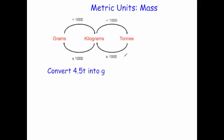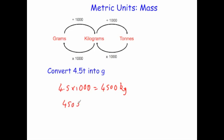Convert 4.5 tons into grams. Going from tons to grams, you times by 1,000 to get into kilograms: 4.5 times 1,000 equals 4,500 kilograms. Then to go from kilograms into grams, times by another thousand: 4,500 times 1,000, adding on three zeros, gives 4,500,000 grams.